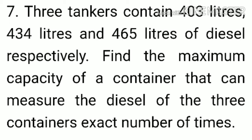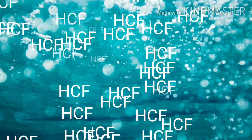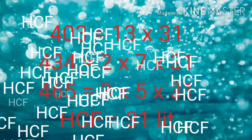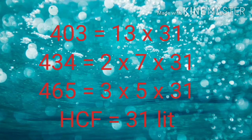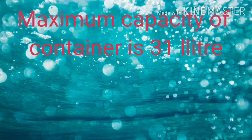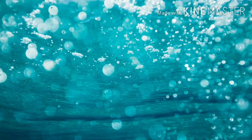3 tankers containing 403 liters, 434 liters, and 465 liters of diesel respectively. We are to find out the maximum capacity of a container that can measure the diesel of all 3 containers an exact number of times. Again the same wording — the word 'maximum' tells you to find the HCF of these 3 numbers. After factorization, the answer is 31 liters. Hence the required capacity of the container is 31 liters.